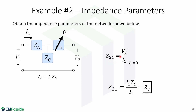Z21 equals V2 over I1 when I2 equals 0. This means that port 2 is open, therefore no current flows through ZB. This is the same circuit as used for Z11. We write V2 in terms of I1 times ZZ, and substituting this gives us that Z21 equals ZZ.